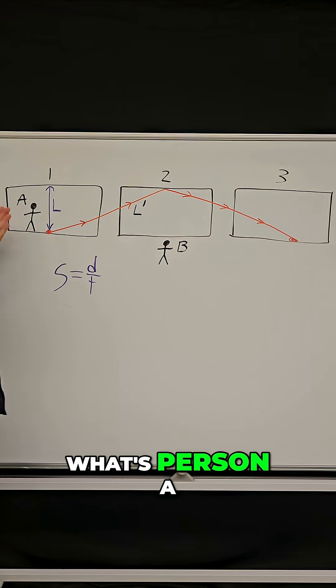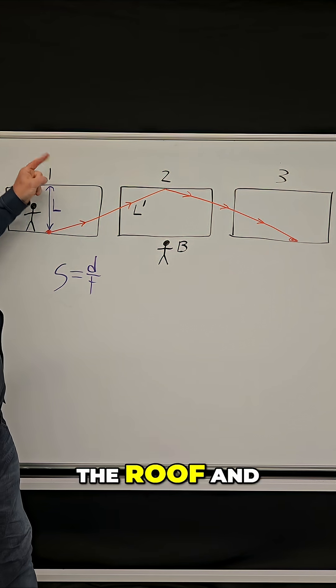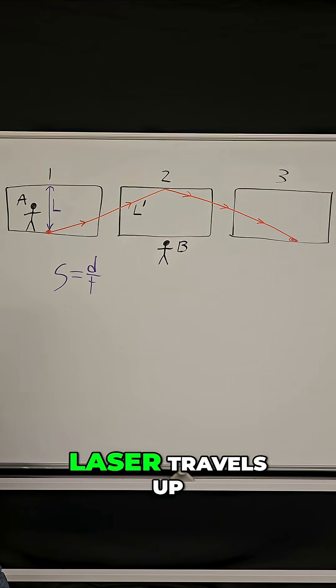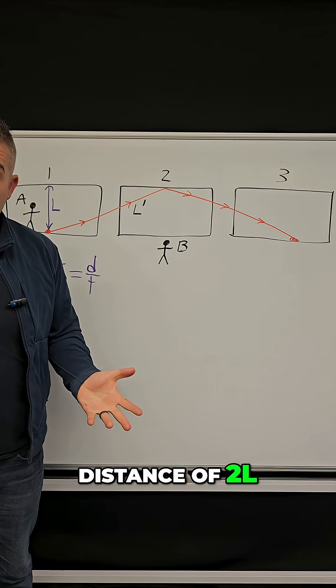Well, what's person A going to observe? They're going to look up and just see the laser hit the roof and come back down. And so the laser travels up a distance of L and another L to get back, so a total distance of 2L.